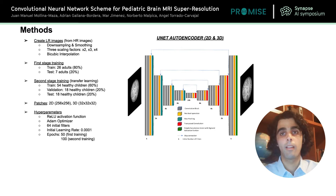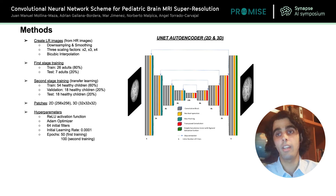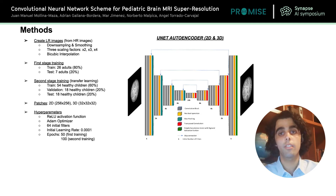Regarding the method, we simulate the low resolution images by first downsampling and smoothing the original high resolution images. This process is repeated for three different scaling factors and the low resolution images are interpolated before entering the network, so that we use the same architecture for all scaling factors. The healthy dataset is used to train the model in two stages.